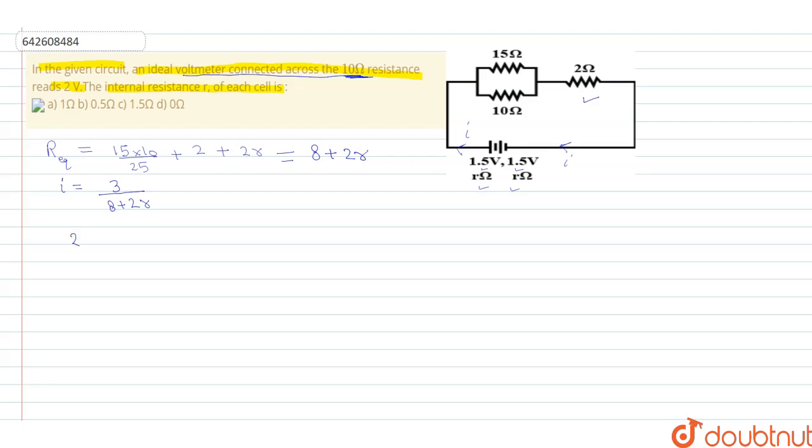We have 2 volt reading to be equal to current flowing and new equivalent resistance, that is r prime. So i value is 3 upon 8 plus 2r, and the new equivalent resistance is now involving these two resistances only,